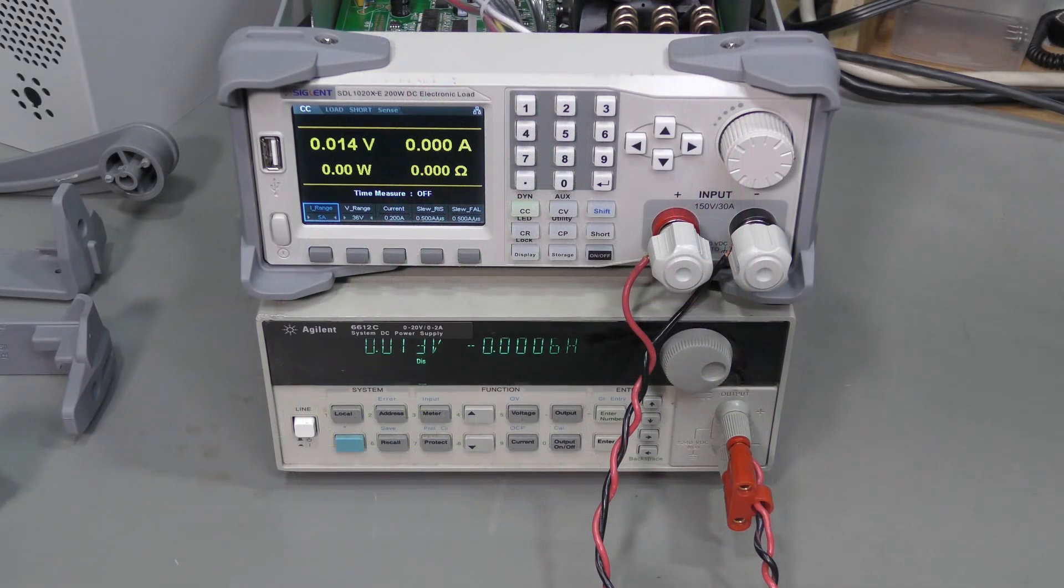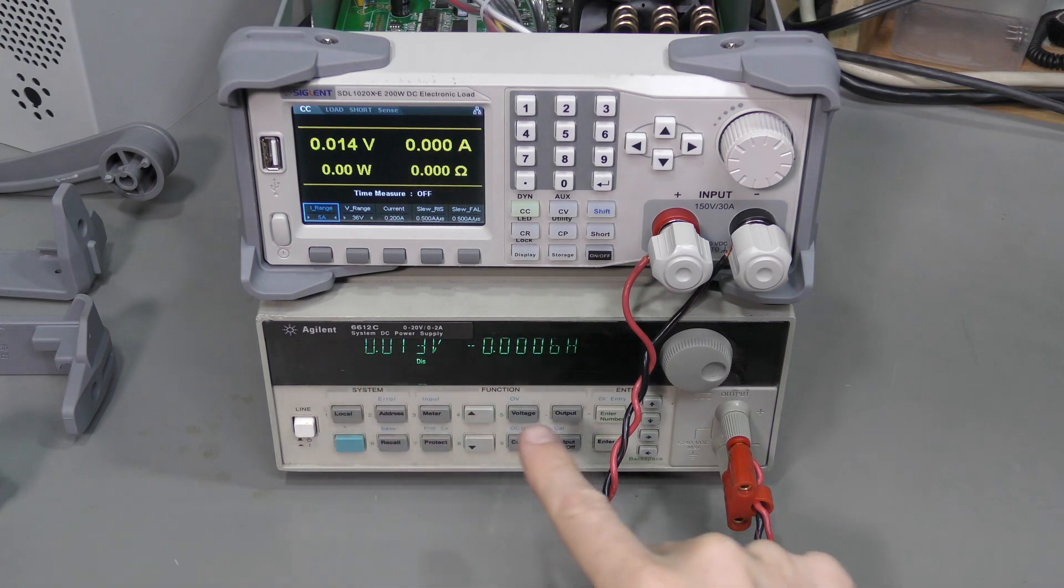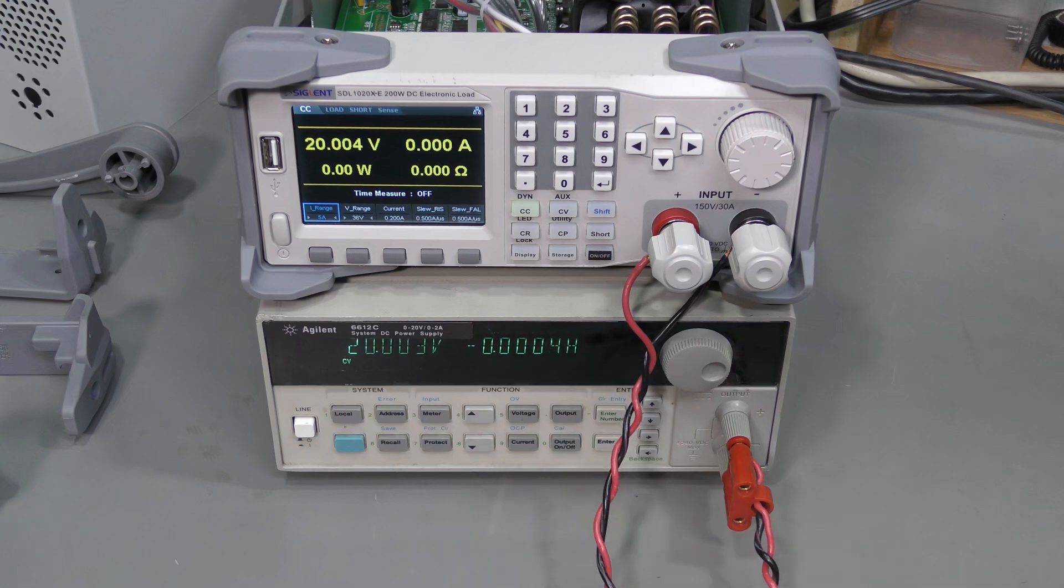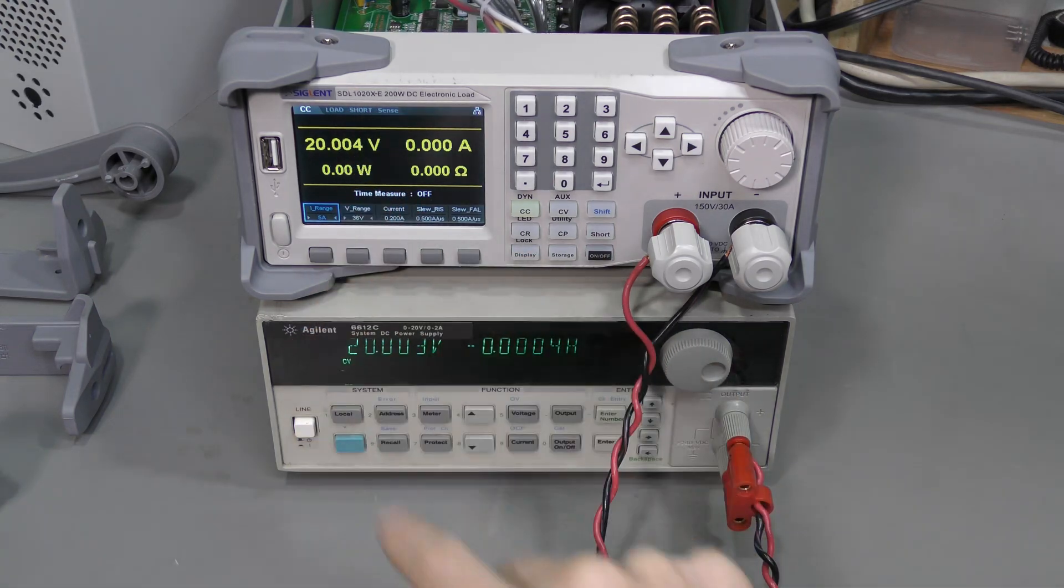Let's give it a go. I set this Agilent supply to the maximum it can do. 20 volts and slightly more than 2 amps. Let's enable the output. We read 20 volts here. Okay.